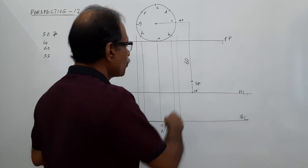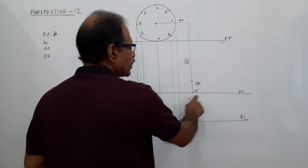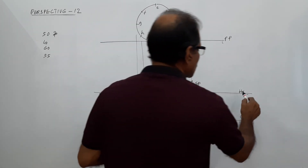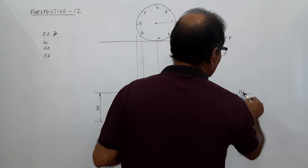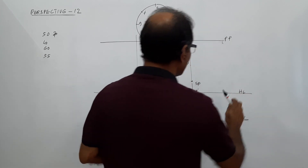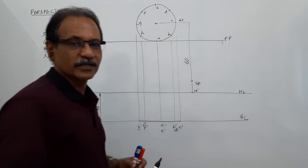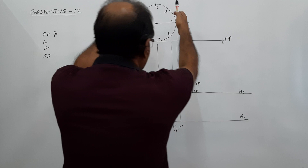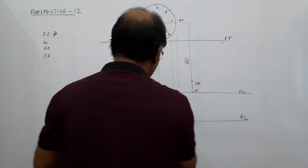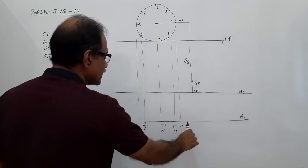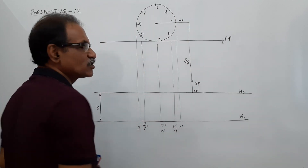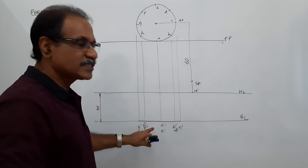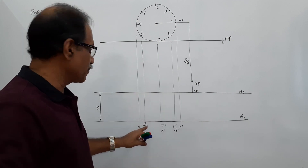Now drop SP down to HL to get SP dash — SP dash is the elevation of the station point. Then draw the elevation of the lamina. The elevation of the lamina is a horizontal line, while the plan of the lamina is the circle.